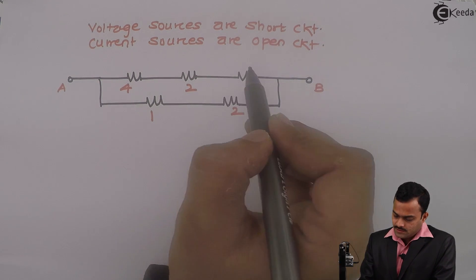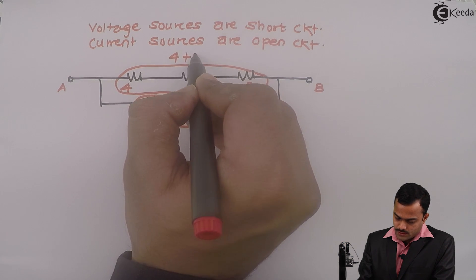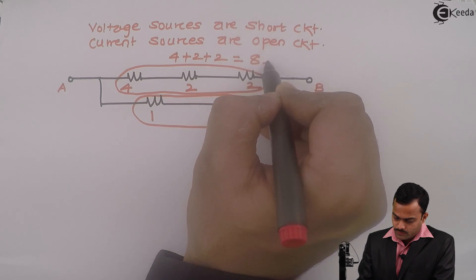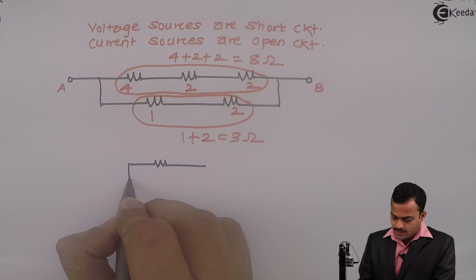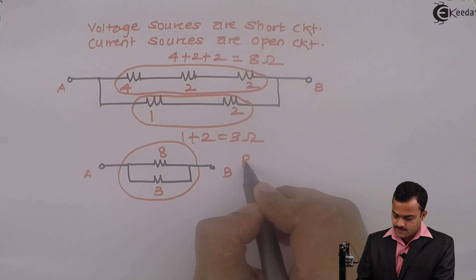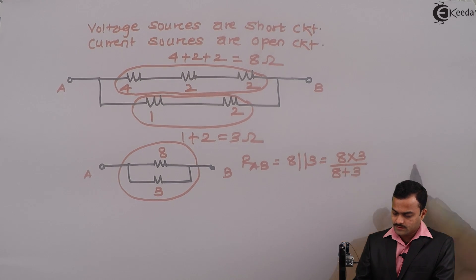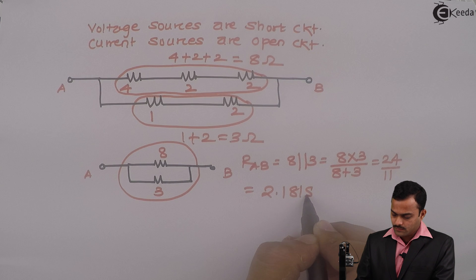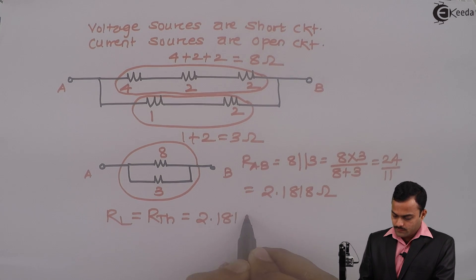A very simple circuit I will get. These 3 resistances are in series, and these 2 are also in series. So 4 plus 2 plus 2 is 8 ohm, and 1 plus 2 is 3 ohm. So RTH is 8 parallel with 3, which is 8 multiplied by 3 divided by 8 plus 3, which is 24 divided by 11 = 2.1818 ohm. So to get maximum power transfer to RL, RL should be equal to RTH = 2.1818 ohm.